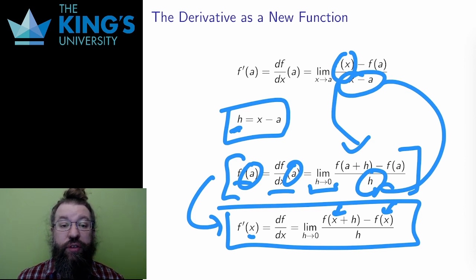If f is position, f prime is velocity and can be evaluated anywhere. I get an entirely new function, one which measures the rate of change of the original at all its points.